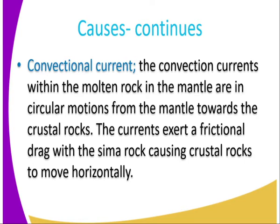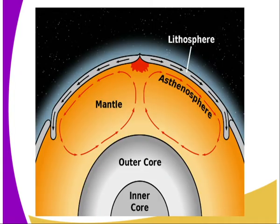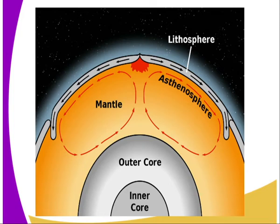So as the convection current is dragging the sima rocks, it causes the crust rocks to move horizontally. As you can see from the diagram, the circular motion of the magma within the mantle causes the dragging of the sima to move in the direction they are moving. As a result, there is the crust rocks movement.